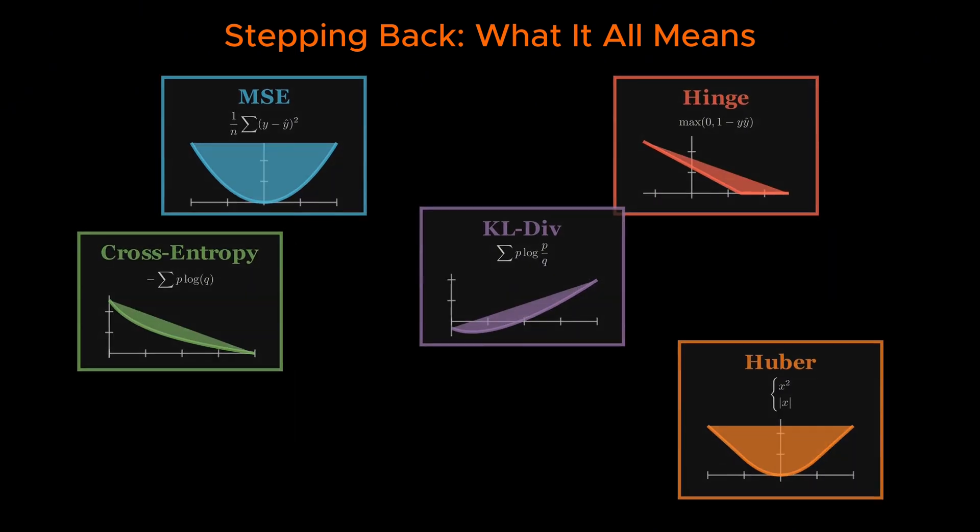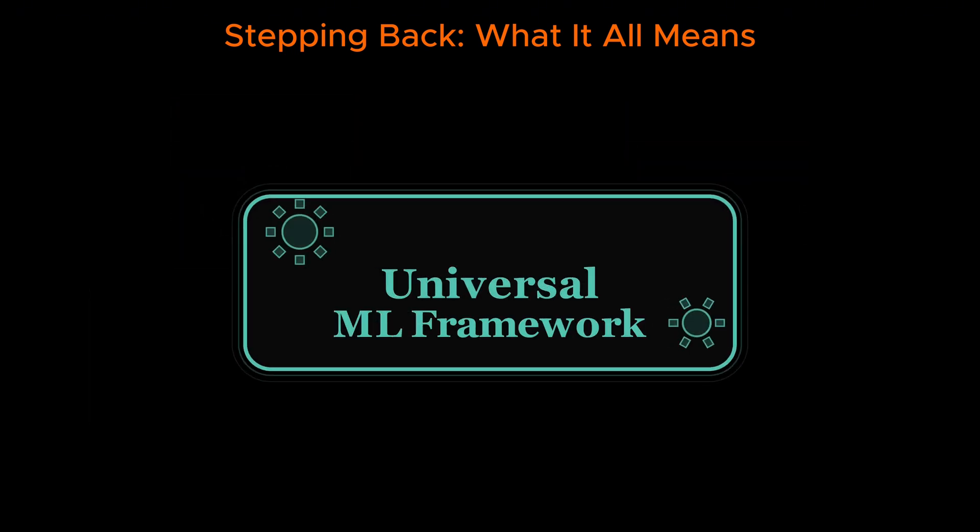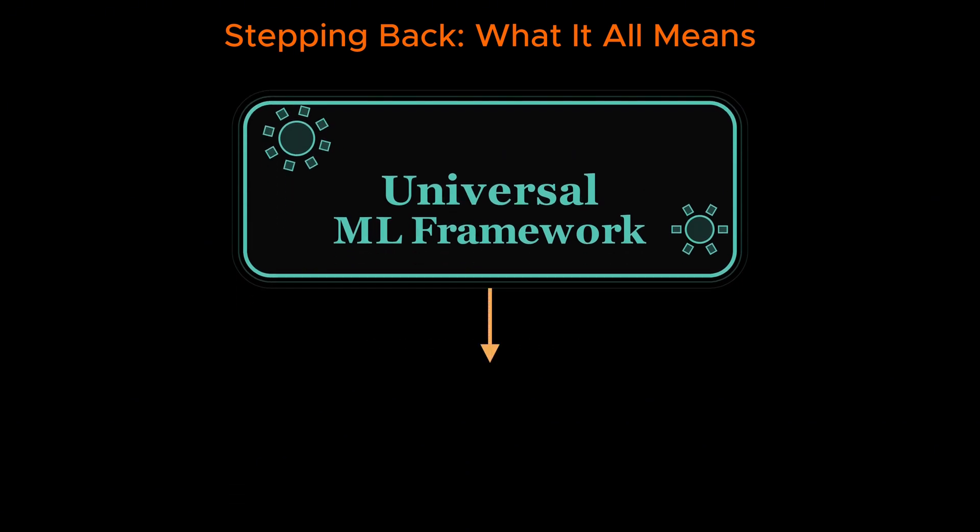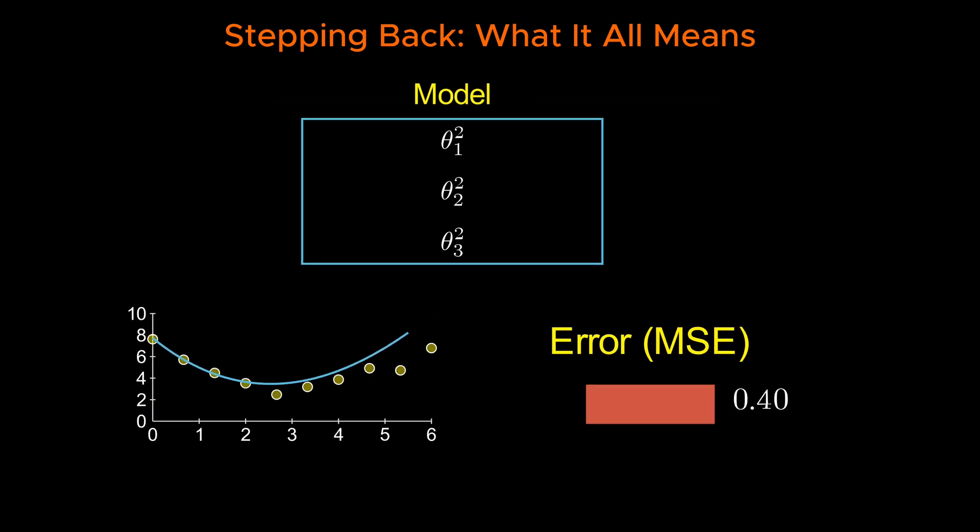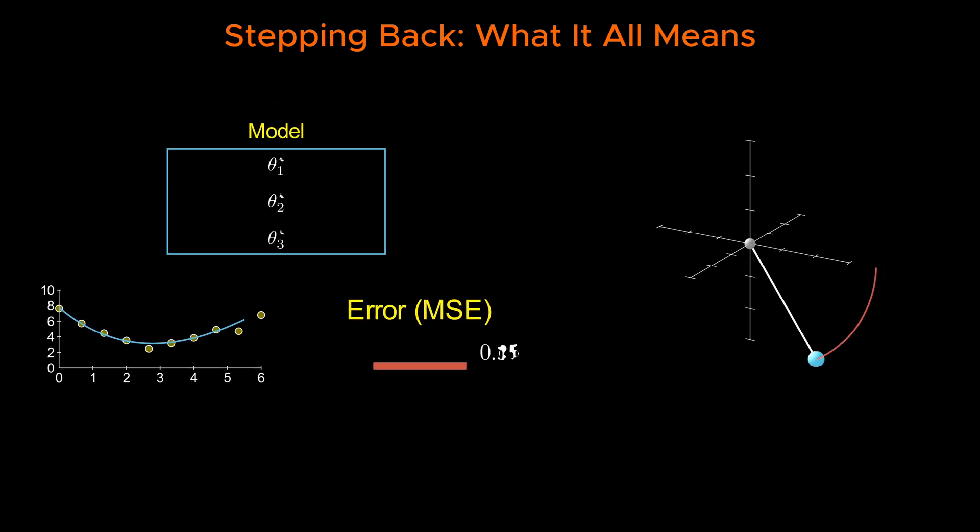If we could understand that, and if we could mimic it, perhaps we could design a new kind of machine learning framework. One not limited by arbitrary loss functions, but governed by a universal principle of least action. A framework where models don't just fit data, but behave like nature evolving, adapting, and optimizing effortlessly according to the same rules that govern the universe itself.